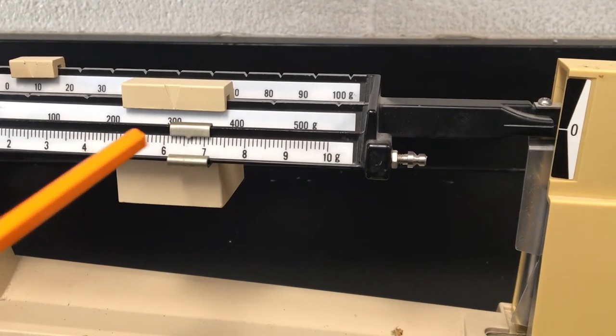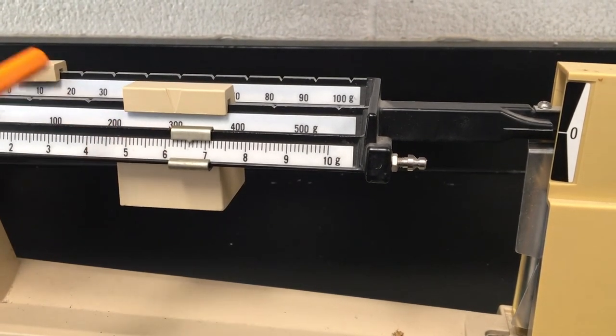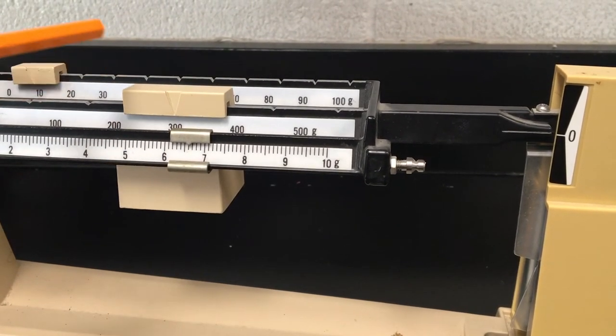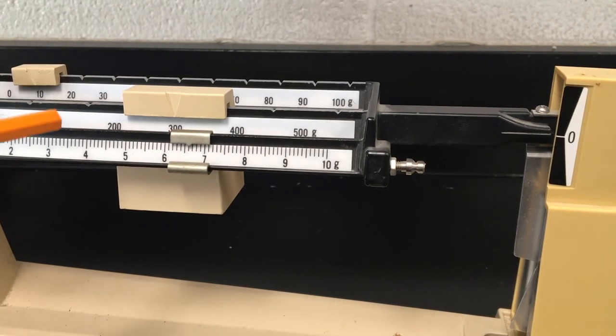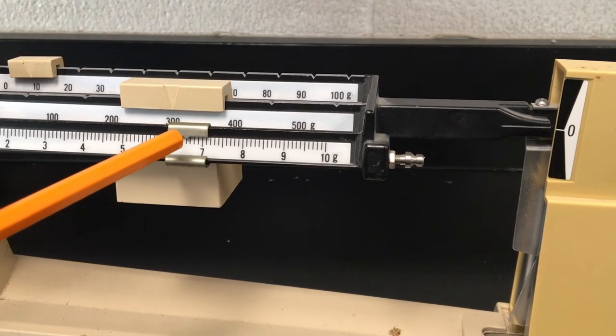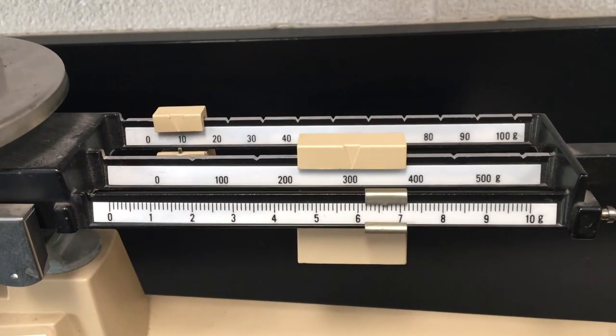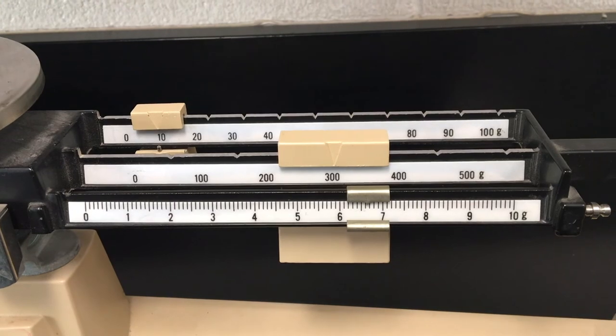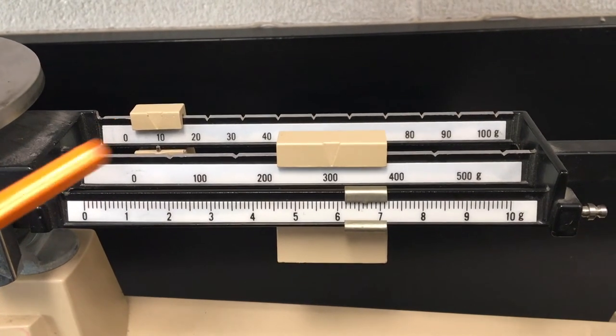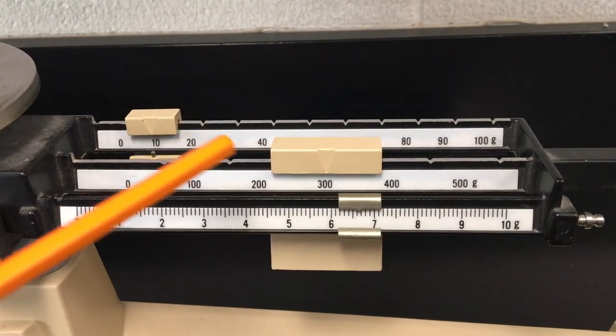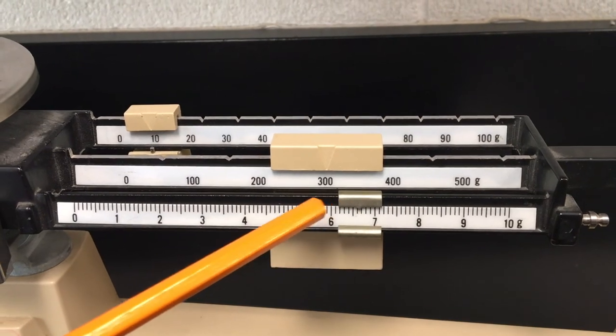So I'm going to call it at the six, so I have 300 plus 10 plus 6.6. So this would be 316.6. Again, 300 plus 10 plus 6.6 grams.